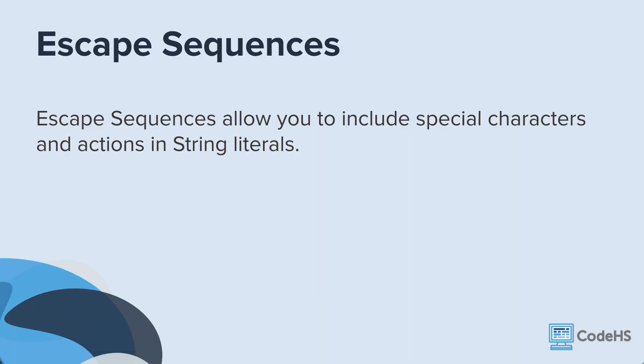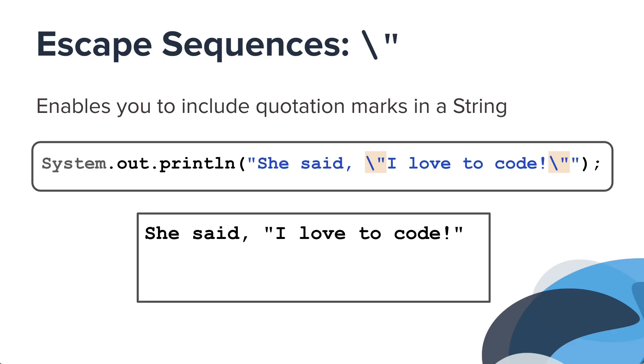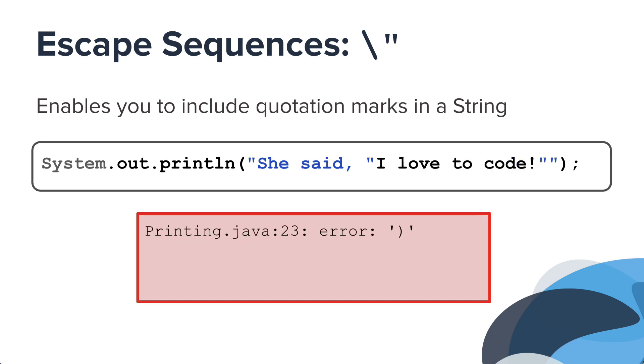Another important characteristic of string literals is escape sequences. Escape sequences allow you to include special characters and actions in string literals. They start with a backslash and have special meanings in Java. You can find the backslash on your keyboard, which is typically right above Enter or Return. The backslash quotation mark enables you to add quotation marks in a string. Without the escape sequence, Java would read the quotation marks as the end of your string literal, which would cause an error.